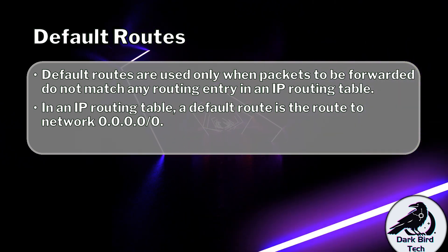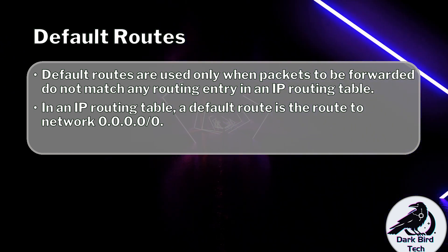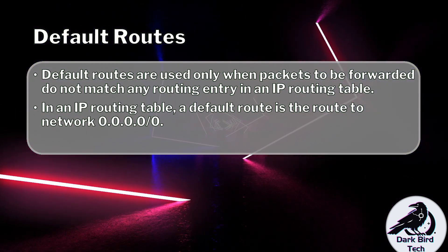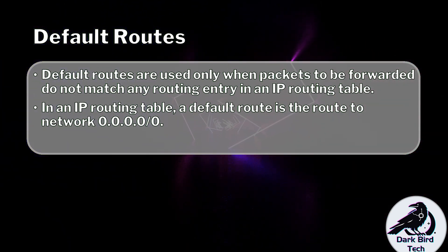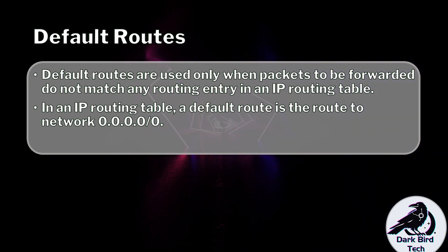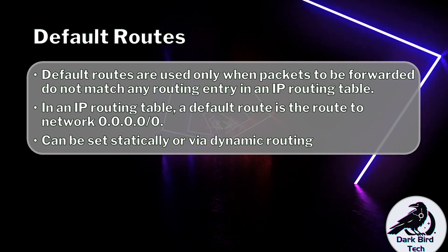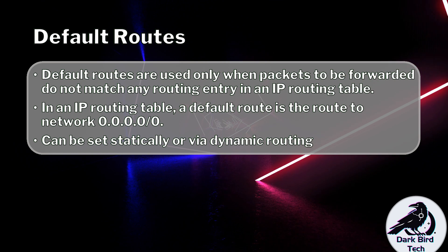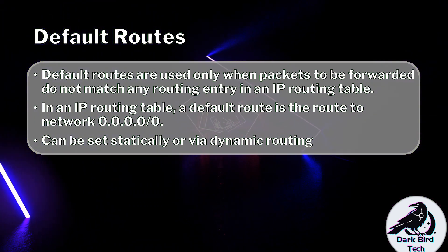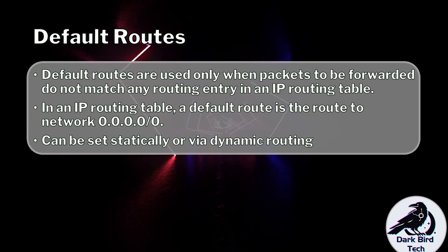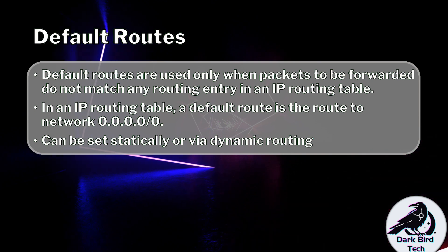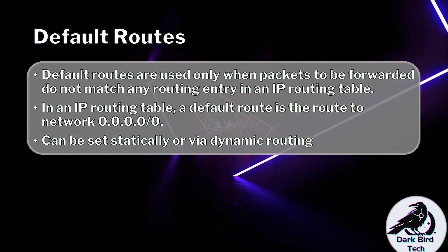In a home or small business network, you're not going to have every destination network address in the world — that's what you're paying your ISP for. You'll just have default routes for networks outside your organization pointing to the ISP, and the ISP will sort out the rest of the routing. When you want to set up a default route, you can do it statically or via a dynamic routing protocol — or both at the same time. You can statically set up a default route and use dynamic routing for the rest of your network. The preference and cost logic only matters when there are two or more ways to a given destination.